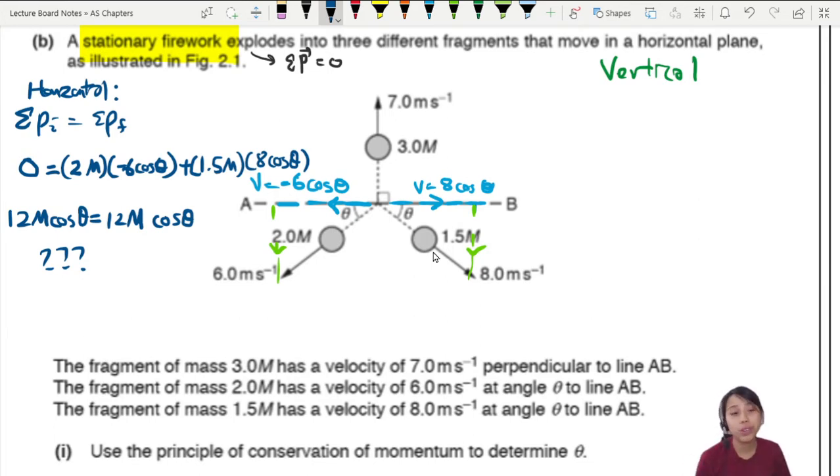That leaves us with the vertical component. Let's write out the vertical component. Maybe you can help us here. So vertical component, they are both moving downwards, the light green one. So the very first one here, I'm going to write here, Vy is going to be 8 sine theta. The one on the left, the velocity will be, vertical velocity, will be 6 sine theta.